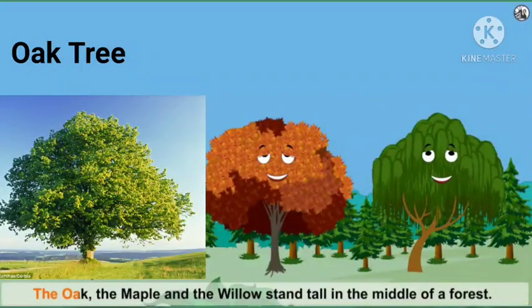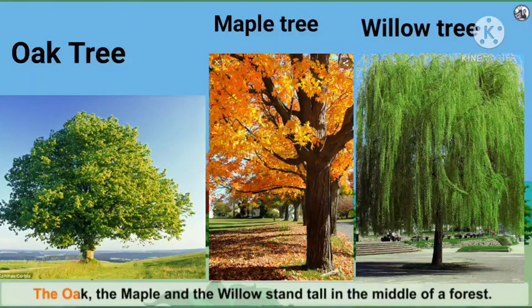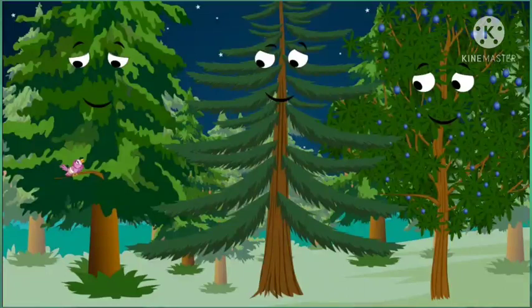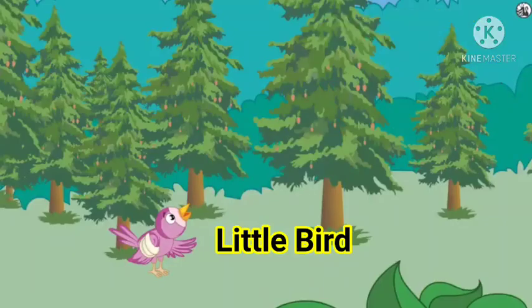Our story, The Bird with the Broken Wing, is presented in the form of dialogues and that is called a play. We have some characters in our play. We have Oak Tree, Maple Tree, Willow Tree, Spruce Tree, Pine Tree, Juniper Tree, Forest Fairy, and also Jack Frost. These are the characters and the scene of the story takes place in the forest.